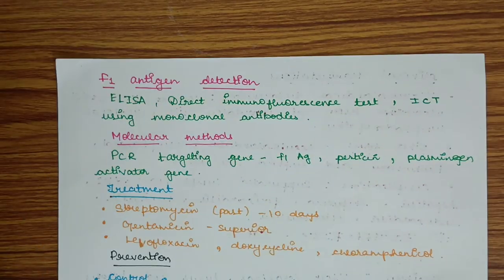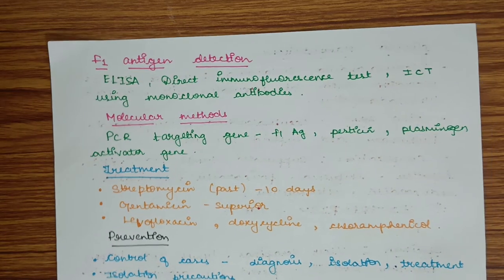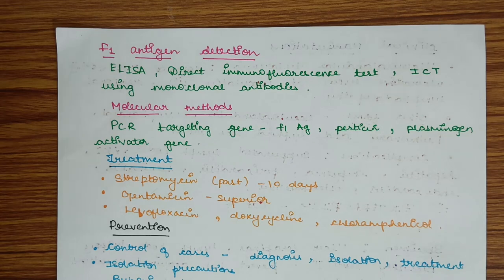Antigen detection: detect F1 antigen, the most virulent and antigenic factor, by ELISA, direct immunofluorescence test, or immunochromatographic test using monoclonal antibodies. Molecular methods include PCR targeting genes of F1 antigen, pesticin gene, or plasminogen activator gene.